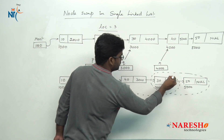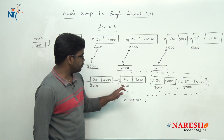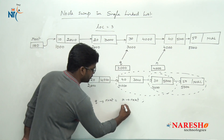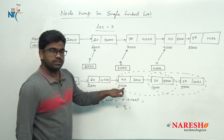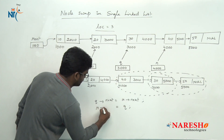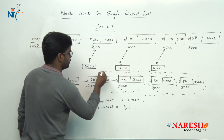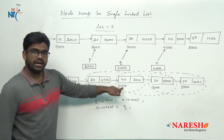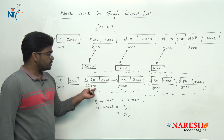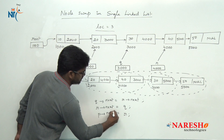Second connection: store q (which is 3000) into r→next. So r→next now holds 3000. This means the fourth node now points to the third node. Third connection: store r (which is 4000) into p→next. P value is 2000, so 4000 is stored into 2000→next, meaning the second node now points to the fourth node.